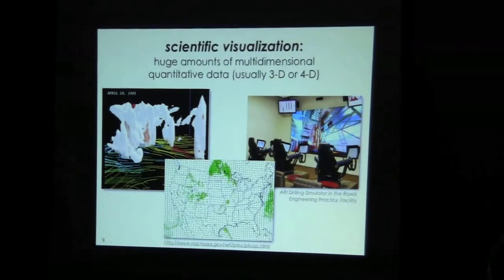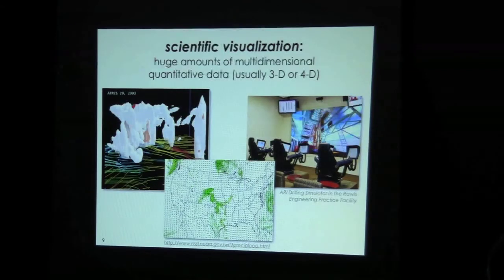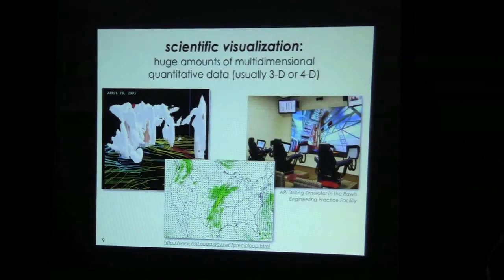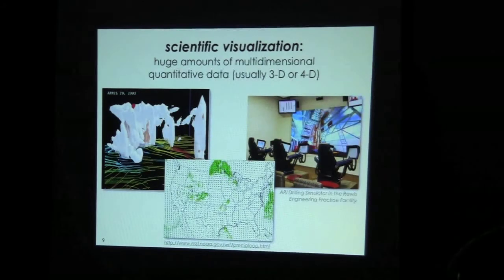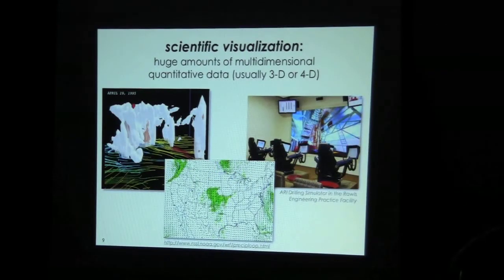Visualization tends to be broken down into three primary areas. The first is scientific visualization, perhaps the oldest, which involves very large amounts of naturally spatial data — typically three-dimensional data, often with time as well. At OU we have the National Weather Center, whose visualization is all about weather, gradients, storm evolution, rainbow color maps, and animation.